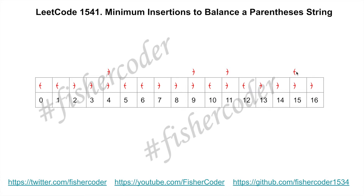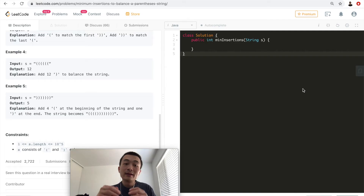Now we're done. We count all the additional left or right parentheses we added above the table: one, two, three, four. That's why the return value is 4. This also explains why some people in the discussion board are confused — because it requires two consecutive close parentheses to meet the definition of a balanced parenthesis string.